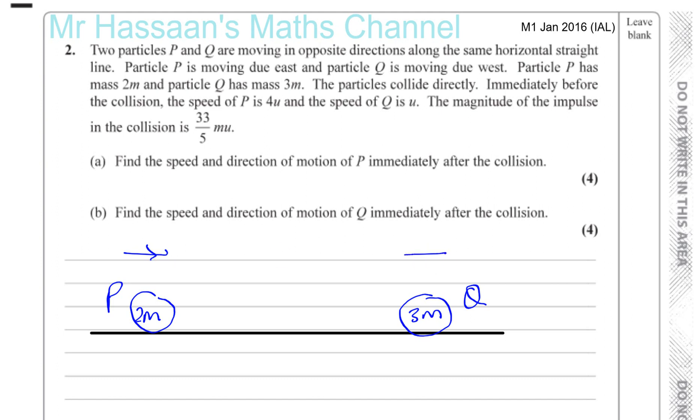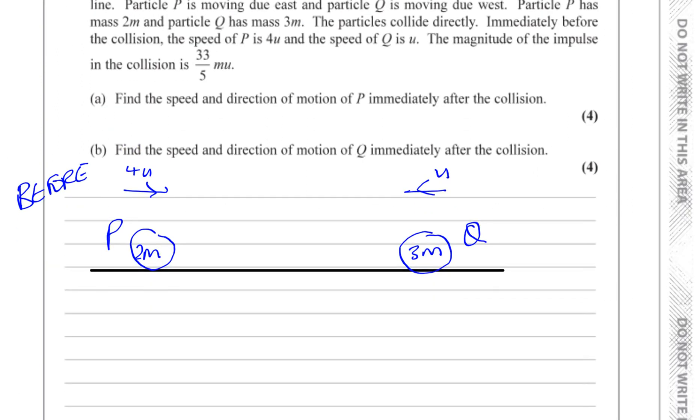The particles collide directly. Immediately before the collision, the speed of P is 4u. This is before, this is 4u. And the speed of Q is just u. The magnitude of the impulse in the collision is 33 over 5.